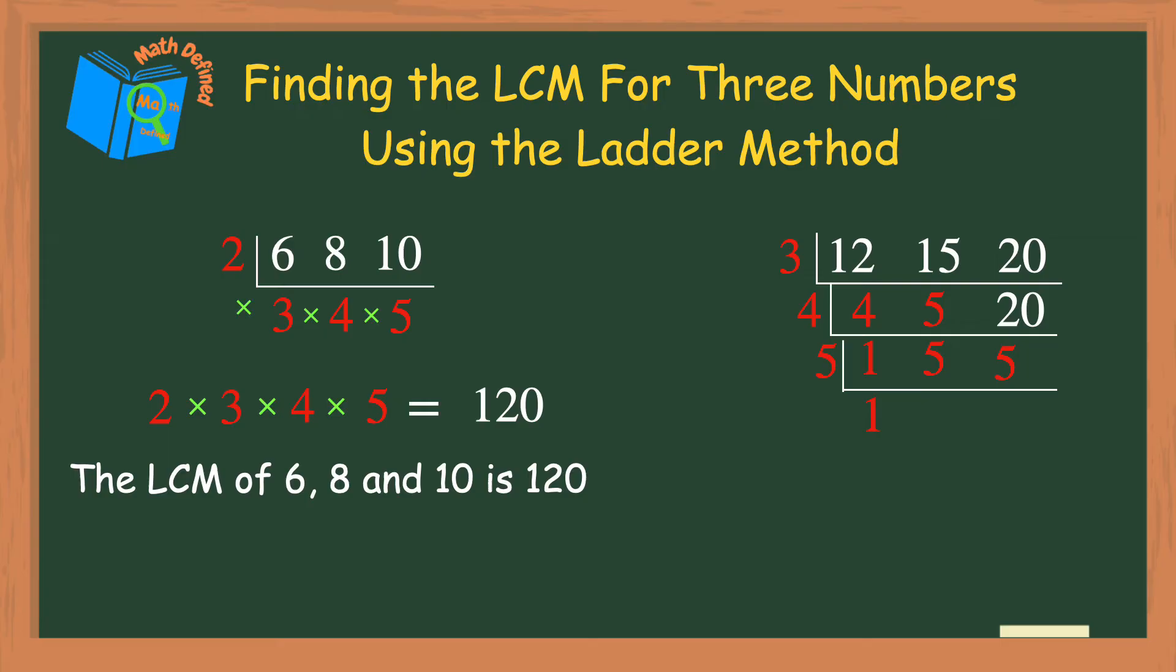And then 5 divides into 5 one time. The last step again is to multiply the factors outside of the ladder. So my LCM of 12, 15, and 20 is 60.